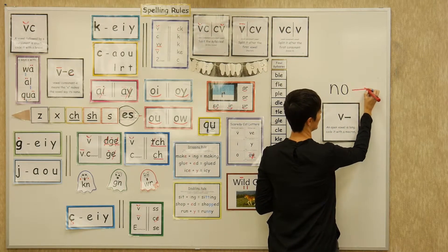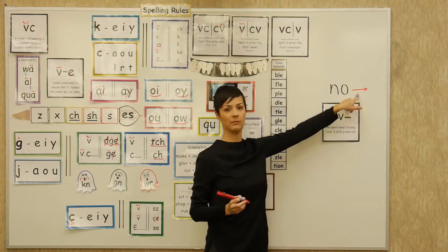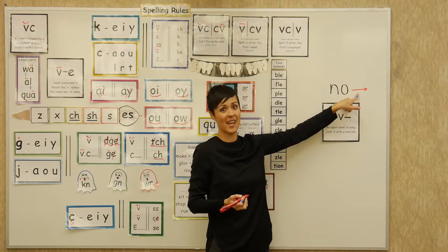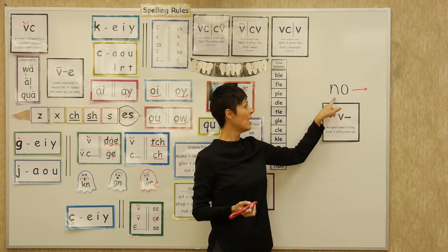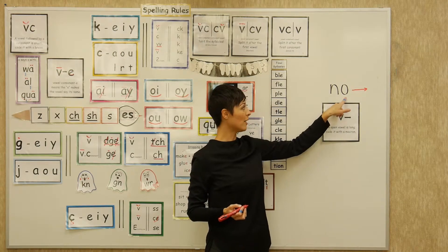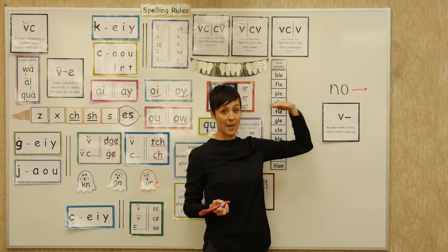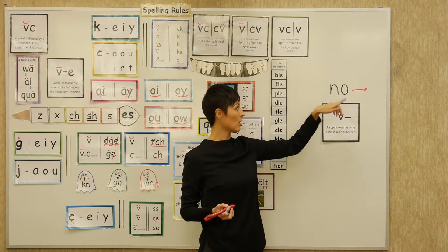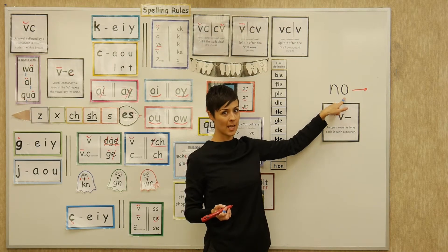I'm going to draw an arrow after it to show there's nothing after it — it's just an open vowel. If we have an open vowel, we code it with a macron to show that there's nothing after it, and the O will say its name, O.